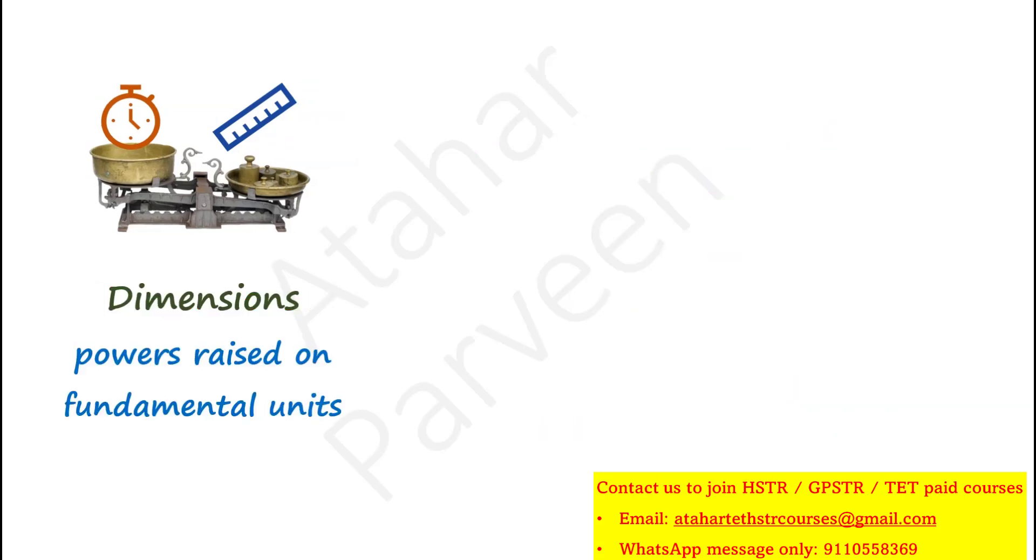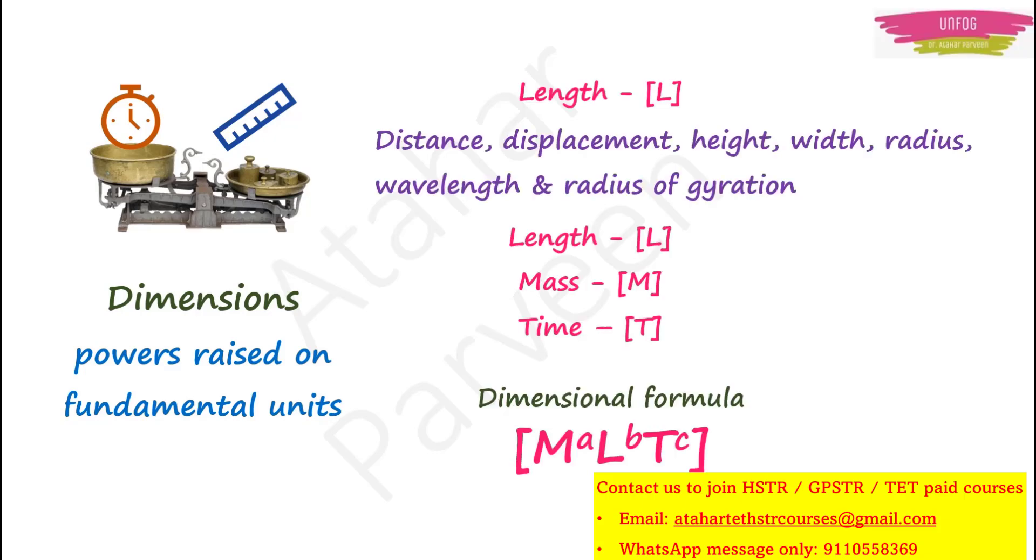Dimensions are the powers raised on fundamental units. For example, the dimension of length is represented as L. You write it in square brackets. So distance, displacement, height, width, radius, wavelength and radius of gyration, they all have same dimension because they are all the measure of length. Similarly, mass is represented as M. We write it as M within square bracket and time as T. We write it as T within square bracket. So a dimensional formula can be written like this within a square bracket.